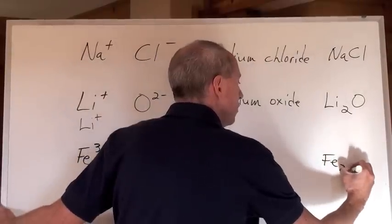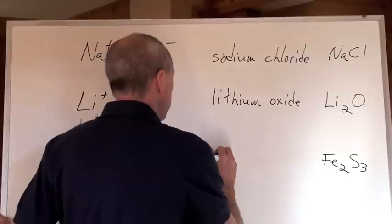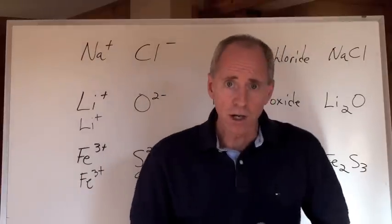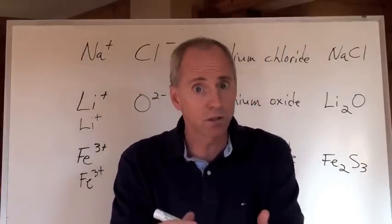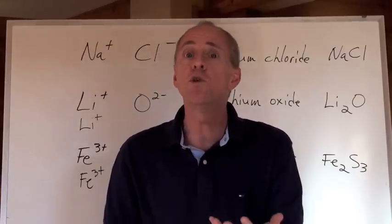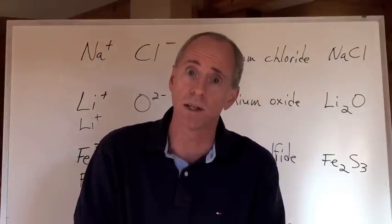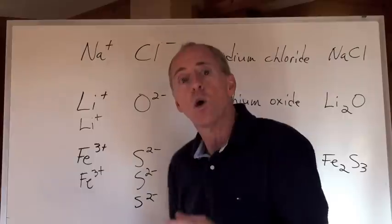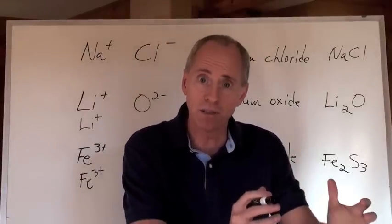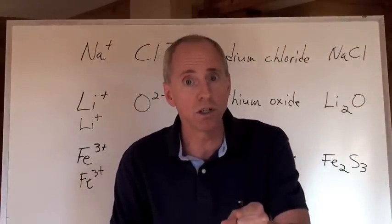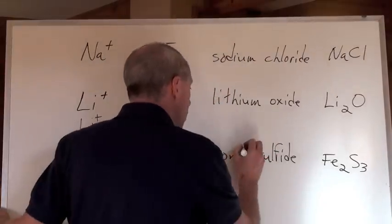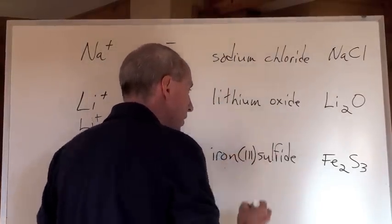You need 2 Fe's for every 3 S's, and that's going to be iron sulfide. But on the periodic table you'll notice that some ions or elements can have more than one charge, and iron is like that. Iron can have a +3 charge and a +2 charge. When you see that multi-valent elements exist where they have more than one charge, you need to say which one you're using. So this compound is called iron(III) sulfide, with Roman numeral III.